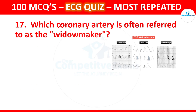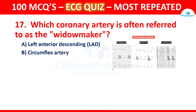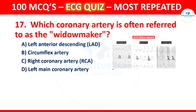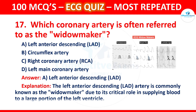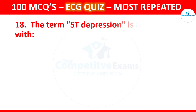Question 17: Which coronary artery is often referred to as the widow maker? Options are left anterior descending (LAD), circumflex artery, right coronary artery (RCA), or left main coronary artery. The correct answer is the left anterior descending (LAD) artery, commonly known as the widow maker due to its critical role in supplying blood to a large portion of the left ventricle.